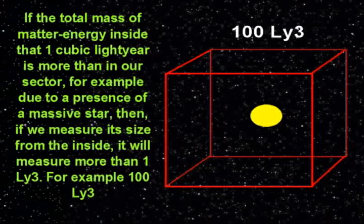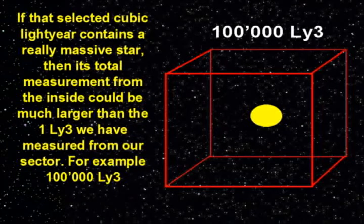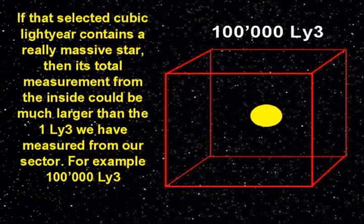If the total mass of matter energy inside that one cubic light year is more than in our sector — for example, due to the presence of a massive star — then if we measure its size from the inside, it will measure more than one cubic light year, for example 100 cubic light years. If that selected cubic light year contains a really massive star, its total measurement from the inside could be much larger, for example, one hundred thousand cubic light years.